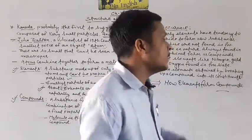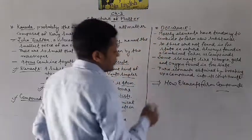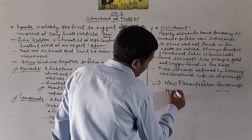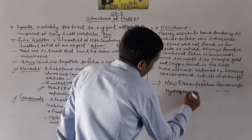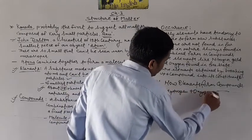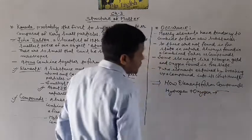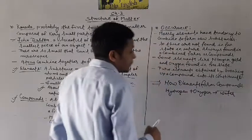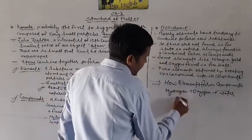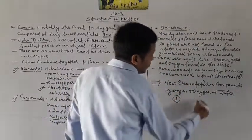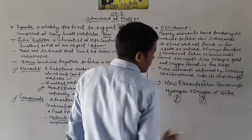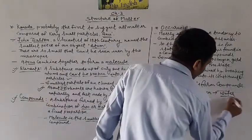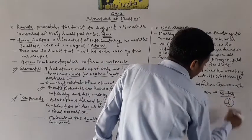For example, baat karen hum water ki — hydrogen plus oxygen, it gives us water. Aap dekhen, hydrogen kya hai? Gas hai. Oxygen kya hai? Gas hai. These two gases combine together to form water, that is, a liquid.